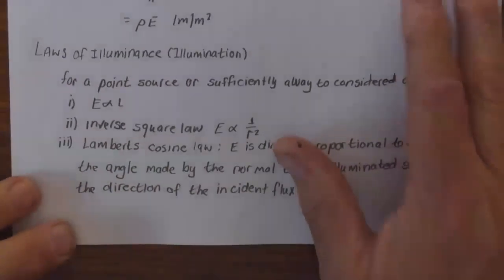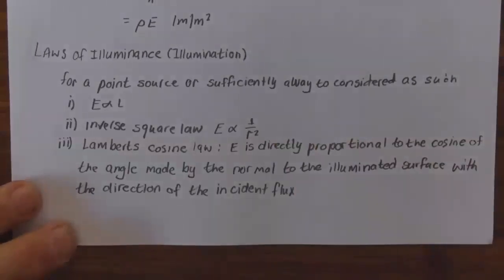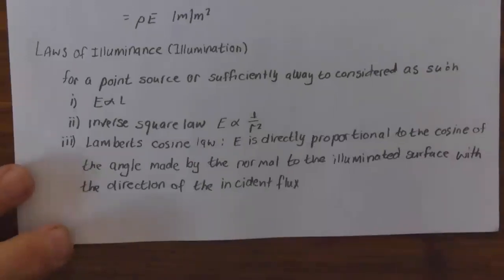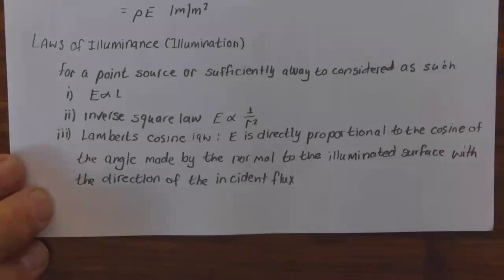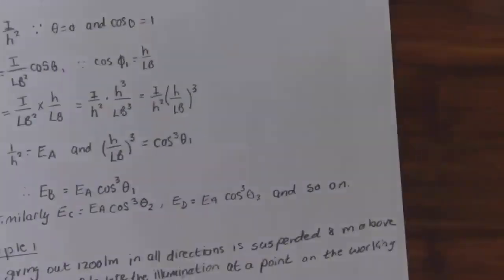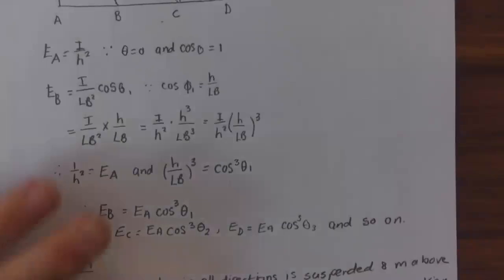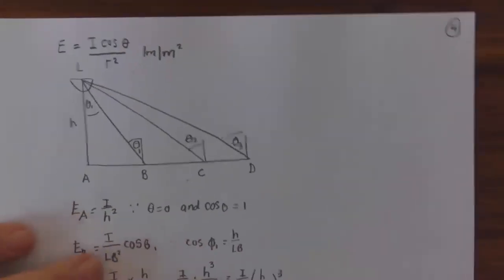Laws of illumination for a point source, or a source sufficiently small to be considered as such: E is directly proportional to I — the inverse square law — E is directly proportional to 1/r², and Lambert's cosine law states that E is directly proportional to the cosine of the angle made by the normal to the illuminated surface with the direction of the incident flux. Therefore E = I·cos(θ)/r².